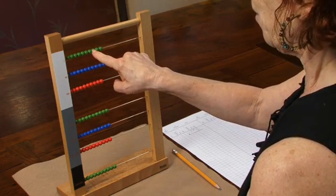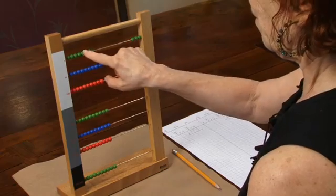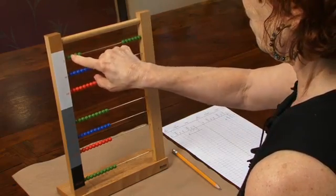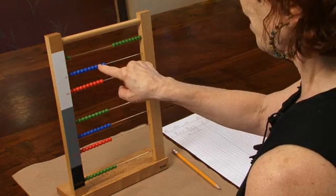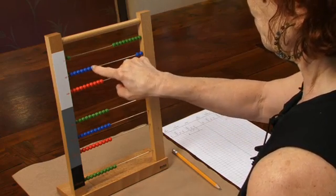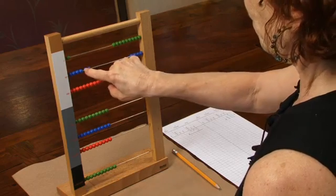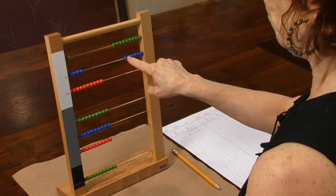Three taken three times is nine. Two tens taken three times is six tens, or 60.